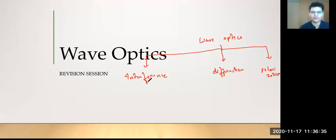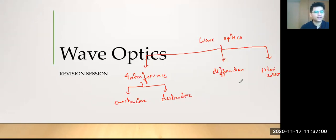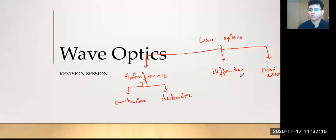When you talk about interference, if you further break it down, I'm not talking about YDSE, Laloids, or Fresnel — just that in this we have two things: constructive and destructive. Same with diffraction. If we remember the concept from waves, interference is a kind of superposition. We discussed path difference and phase difference in waves, and we will further understand those concepts in interference.